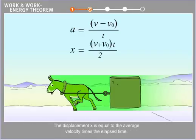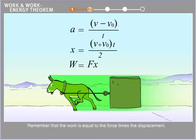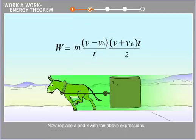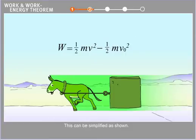The displacement x is equal to the average velocity times the elapsed time. Remember that the work is equal to the force times the displacement. Because f equals ma, the work is equal to the acceleration times the mass times the displacement. Now, replace a and x with the above expressions. This can be simplified as shown.